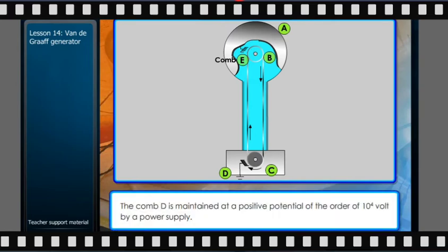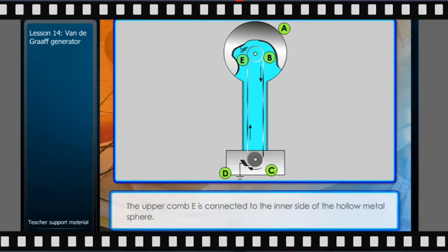Two comb-shaped conductors D and E having number of needles are mounted near the pulleys. The comb D is maintained at a positive potential of the order of 10⁴ volts by a power supply. The upper comb E is connected to the inner side of the hollow metal sphere.